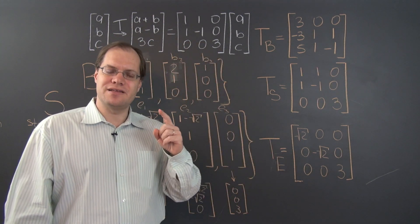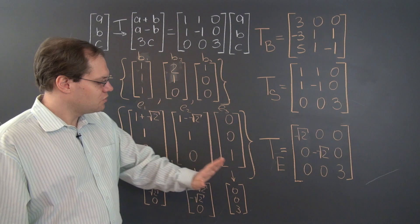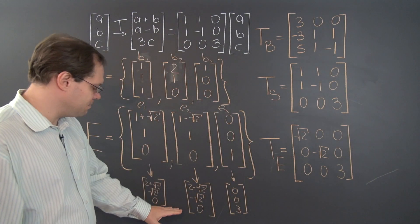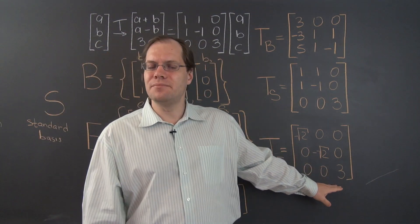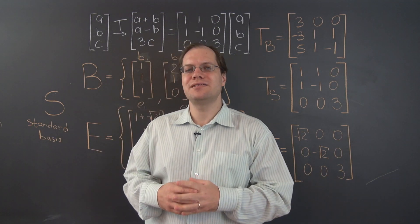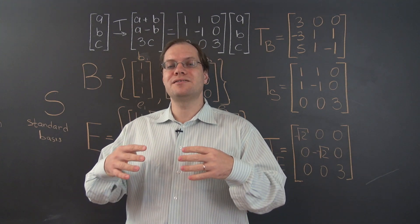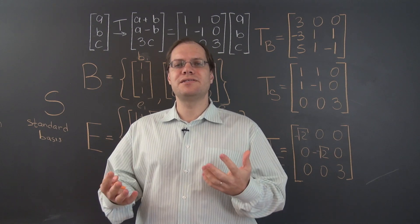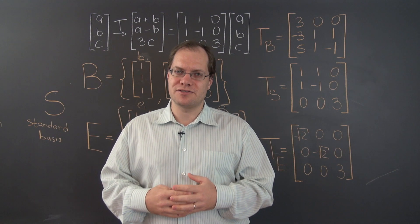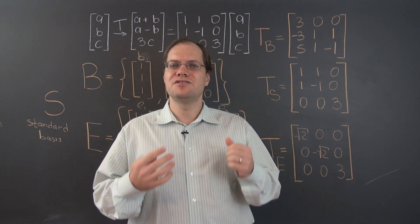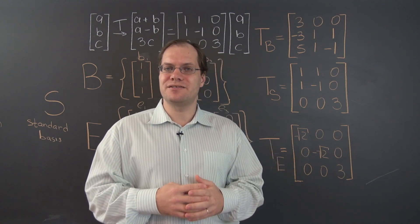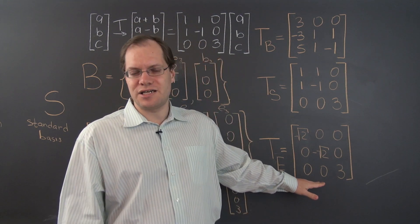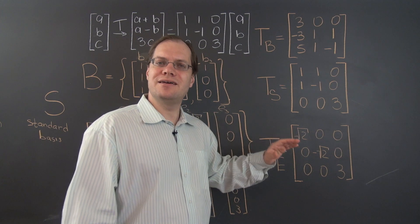I also want to leave you with a question that's not so complicated to answer. You notice that the eigenbasis delivers a diagonal matrix — but could there be a basis that delivers an even simpler matrix? Could there be a basis for which the matrix representing the linear transformation is even simpler? What can be simpler than a diagonal matrix? I guess only the identity matrix. So could there be a basis — can we always, sometimes, or perhaps never choose a basis — such that the matrix representing the linear transformation with respect to that basis is the identity matrix? That's a very good question to think about.